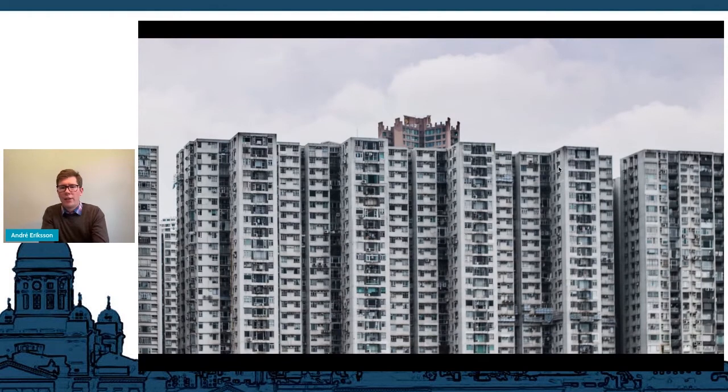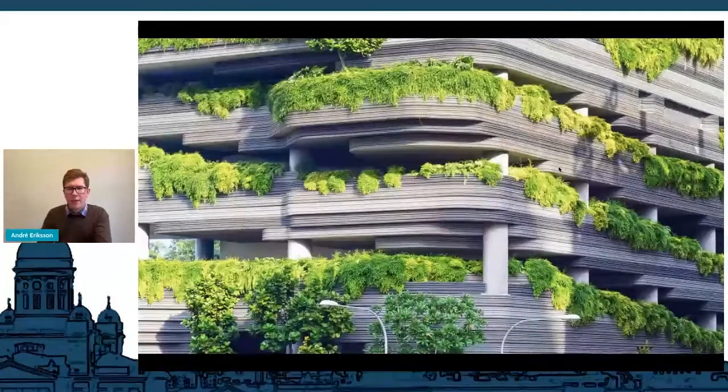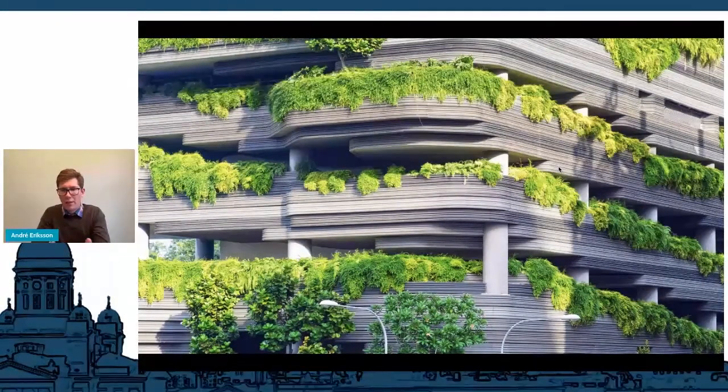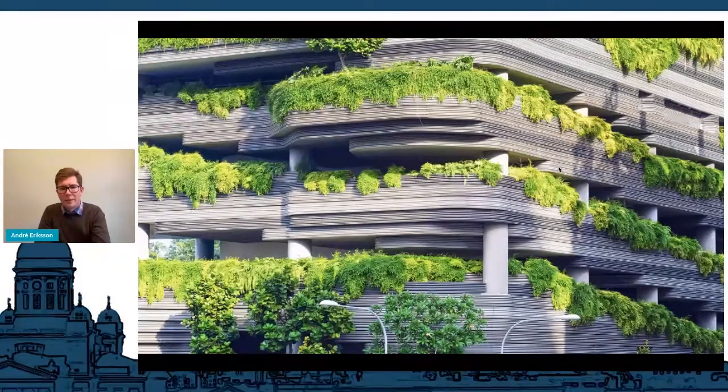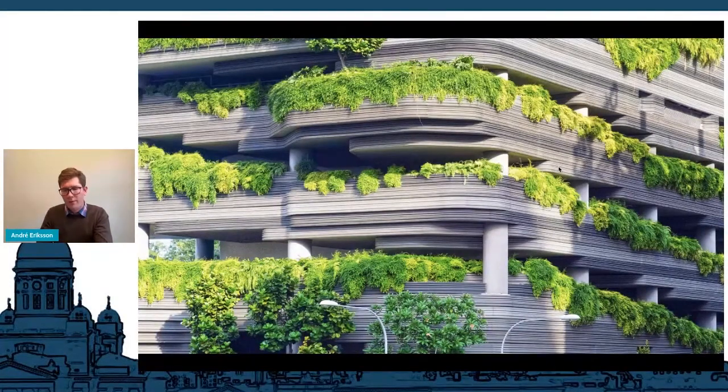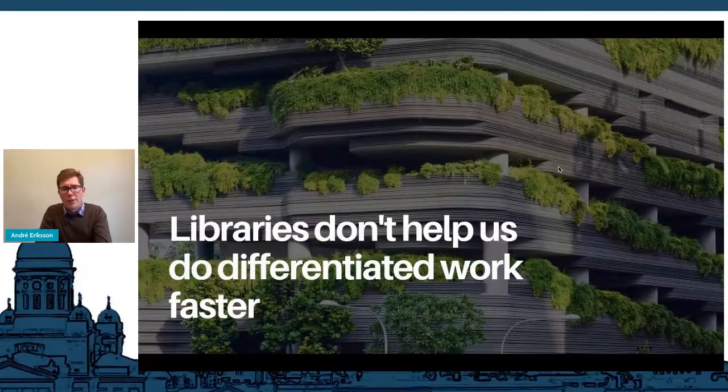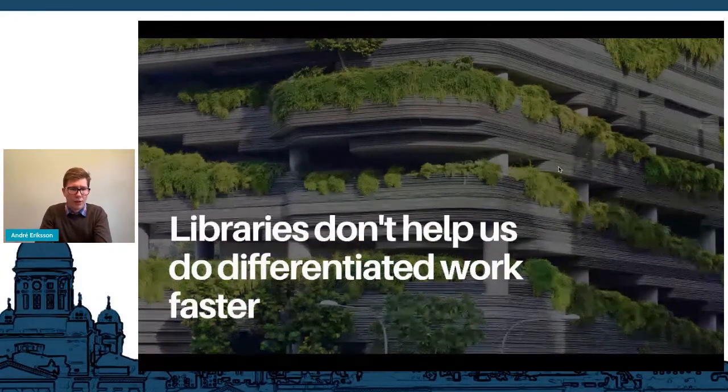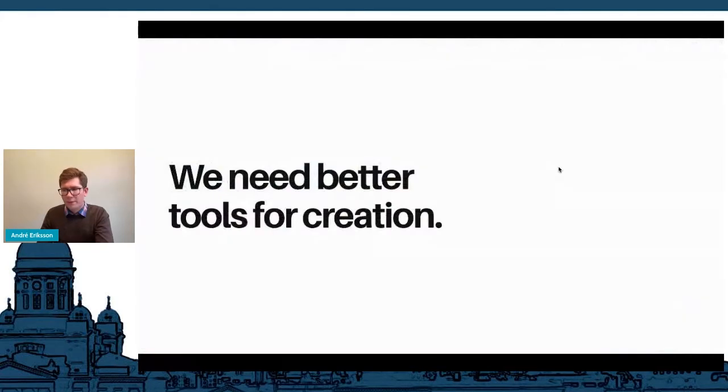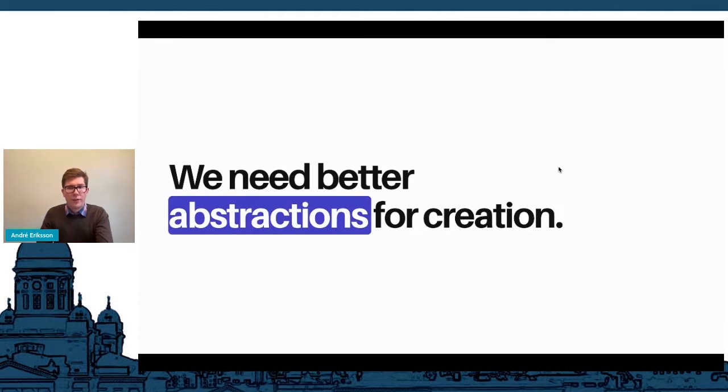So if you were interested in not just building a bunch of undifferentiated buildings like this, and instead wanted to create something unique like this building, if you've been to Singapore you probably recognize this immediately. This is not a building that you can create by importing some libraries. Libraries don't really help us if what we want to do is truly differentiated work. What is it that we can do to actually help with this? We need better tools for creation, we need better abstractions for creation.